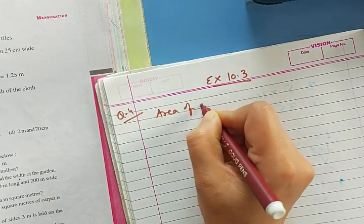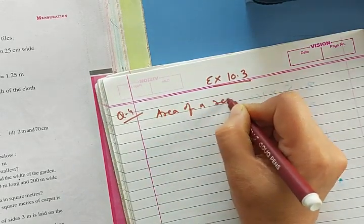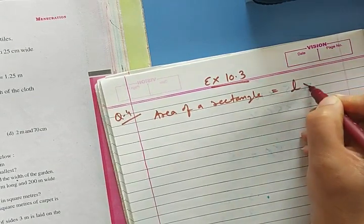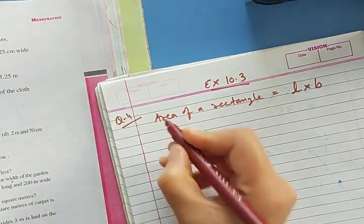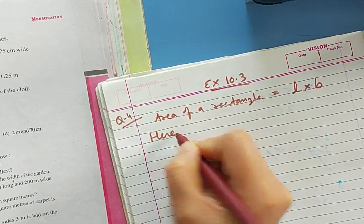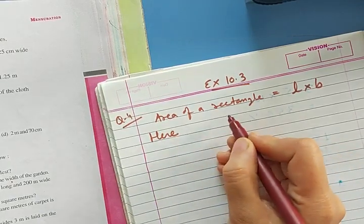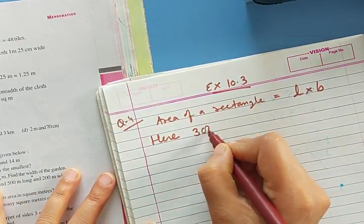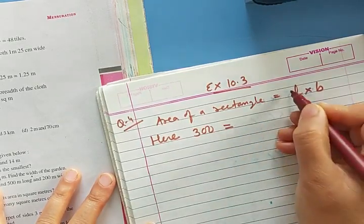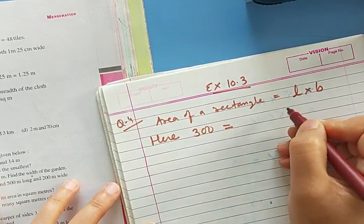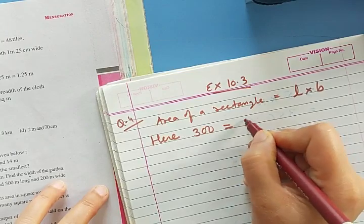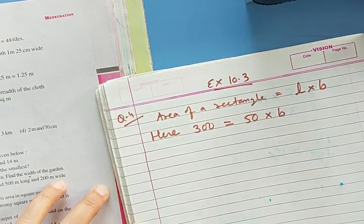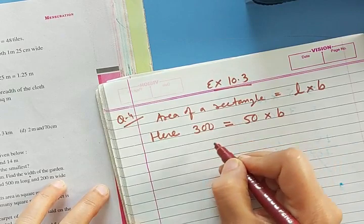Area of a rectangle is equal to L into B. Here, area is equal to L into B. Now, L is also given. So L is 50 into B. We keep the value that is given.